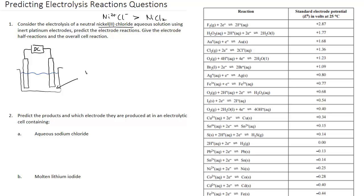It's important to know what ions are present in the electrolyte solution because that determines the reaction. We've got Ni²⁺, Cl⁻, and because this is an aqueous solution, water is also present and may participate at one of the electrodes. Since the electrodes are inert platinum, they just transfer electrons without any side reactions with the electrode material itself.